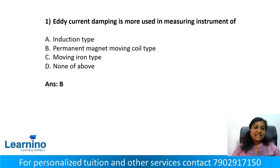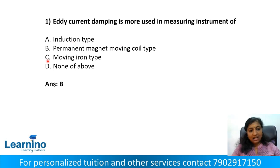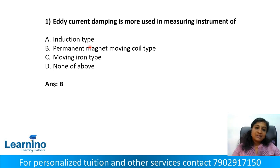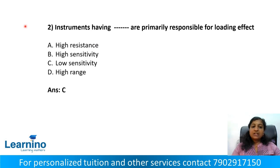Question number 1. Eddy current damping is more used in measuring instrument of: option A, induction type; option B, permanent magnet moving coil type; option C, moving iron type; option D, none of them. Eddy current damping is more used in permanent magnet moving coil type — option B is the correct answer.